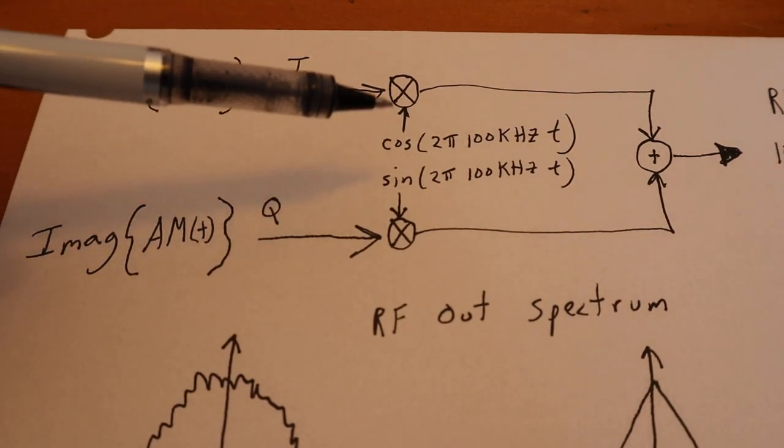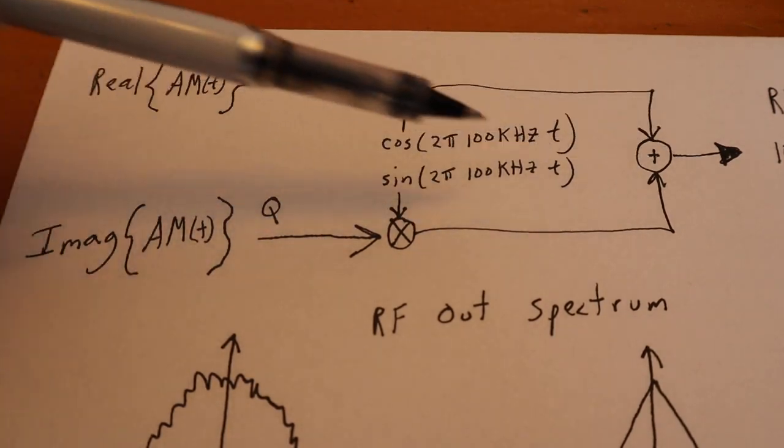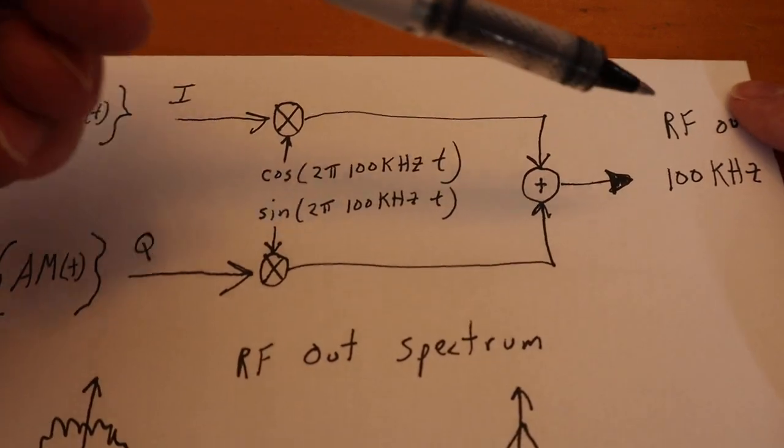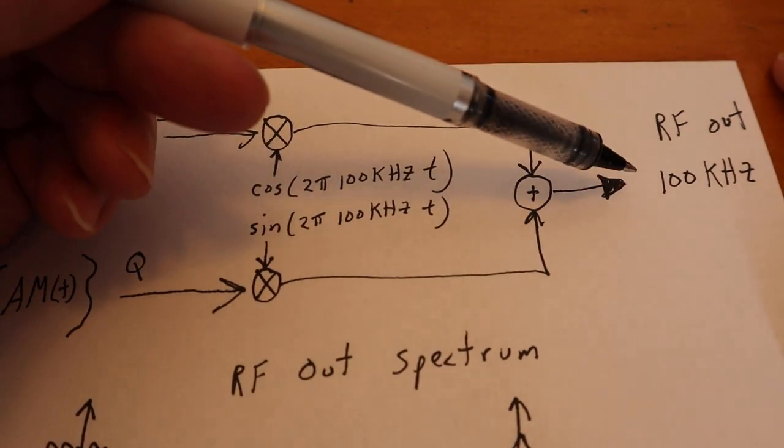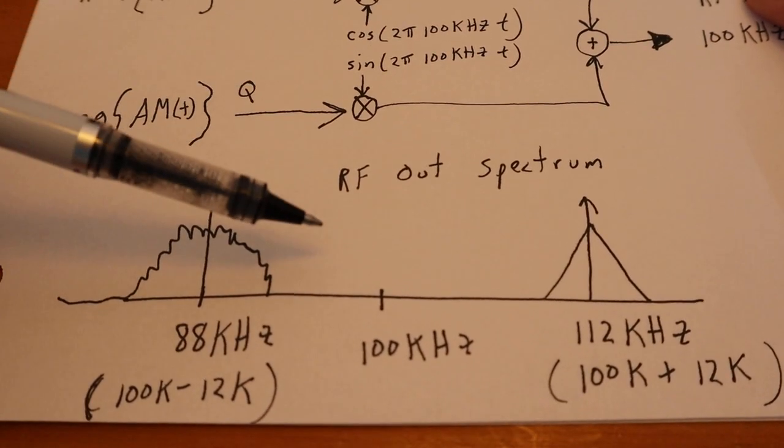And we're going to modulate that up to this 100 kHz carrier, by using this thing called an IQ modulator. So if we look at this final output right here, this is the spectrum that's going to come out.